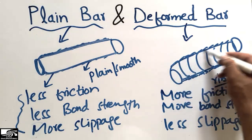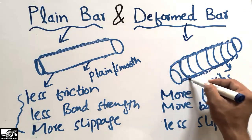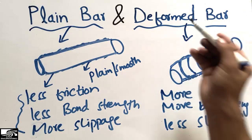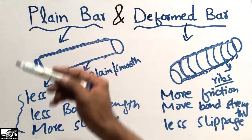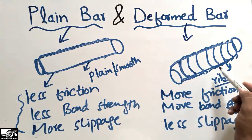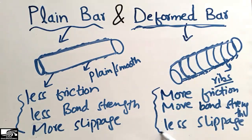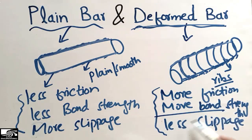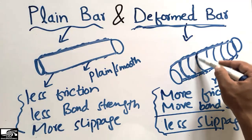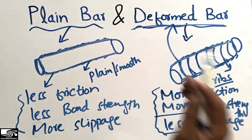These ribs make the deformed bar more useful and more functional than plain bars. That is the main reason why deformed bars are mostly used — because they have good properties: more friction, more bond strength, and less slippage. Because of these ribs, they are known as deformed bars.